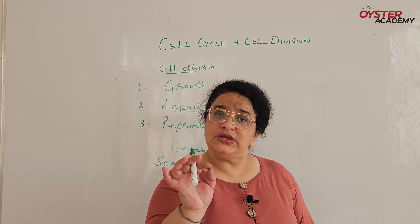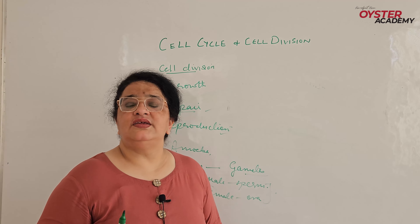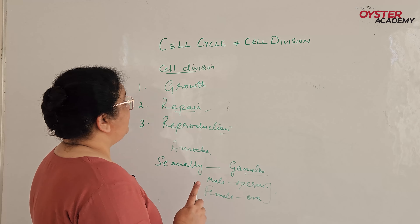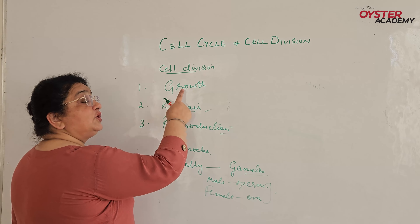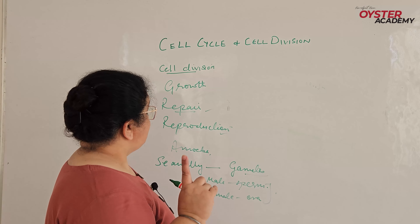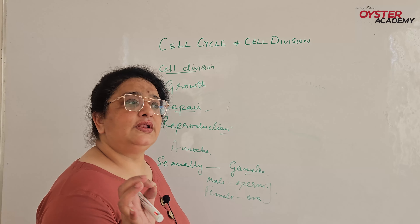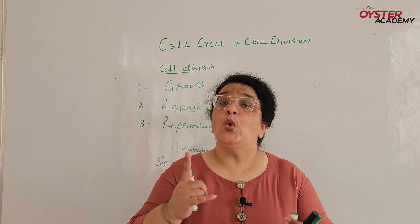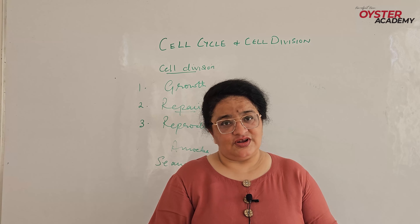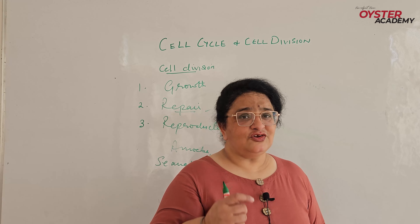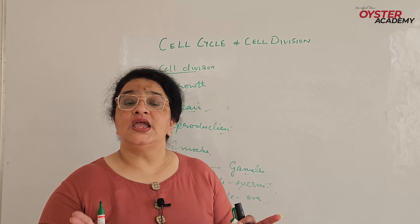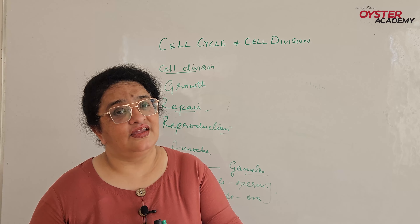Now the question arises: why do cells divide? Why do we need cells to divide? Cells divide for growth. The new organism is developed — that is for growth. So when cells divide 1 to 2, 2 to 4, 4 to 8, this way a new organism develops.